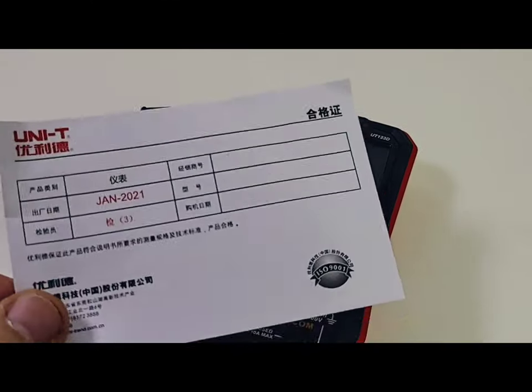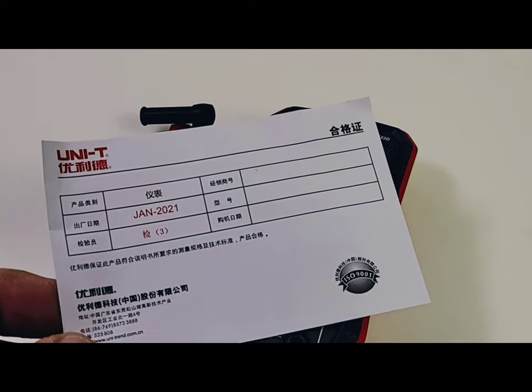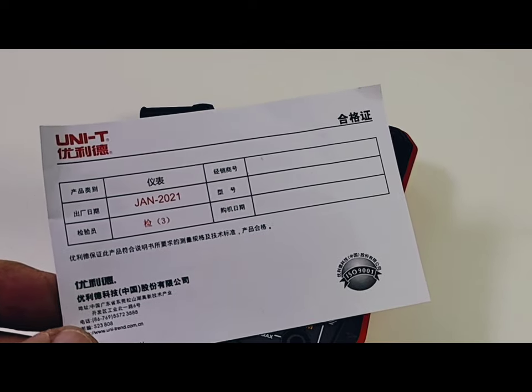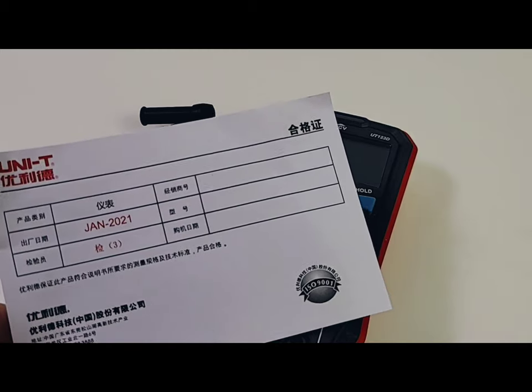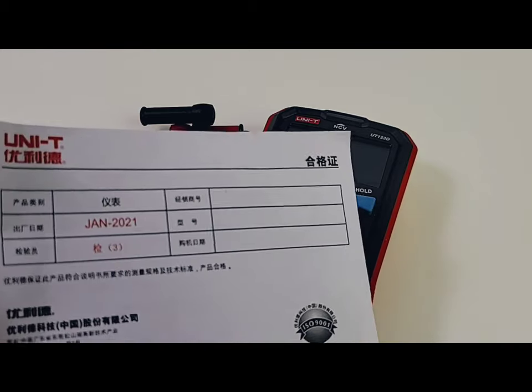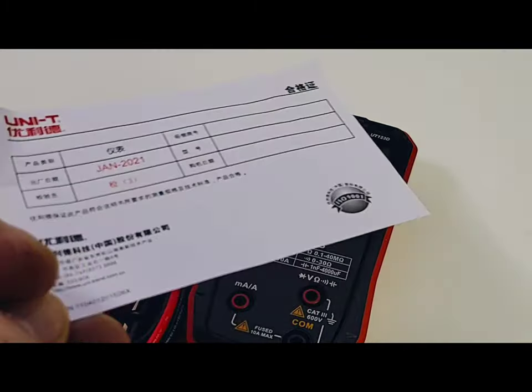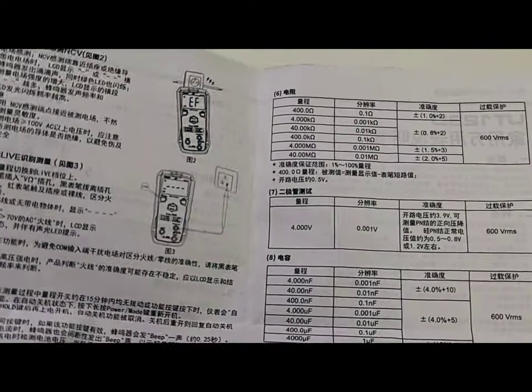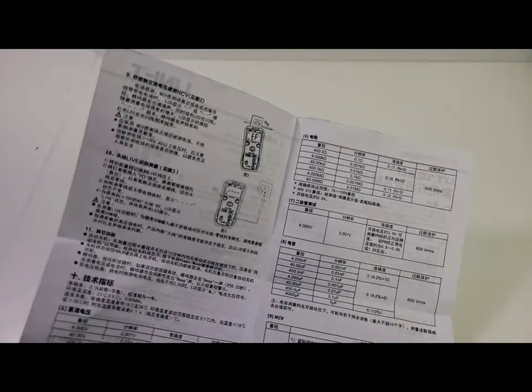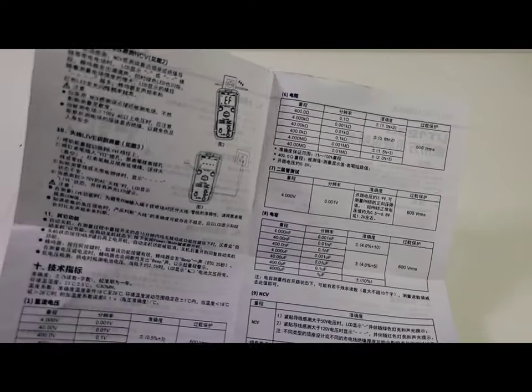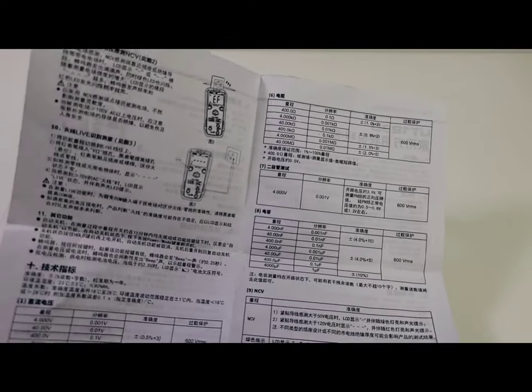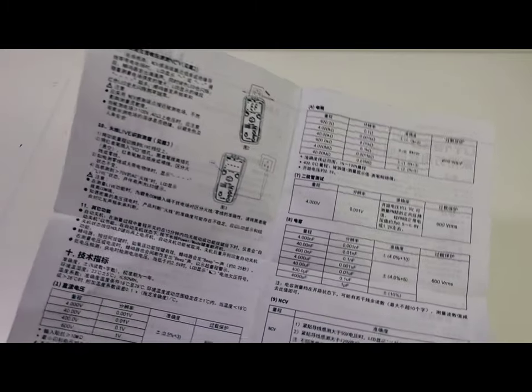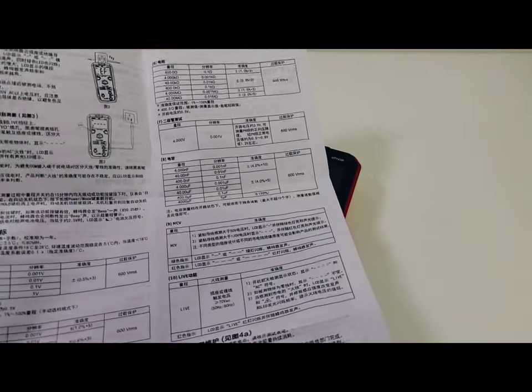What do you get with the meter? You get your date of manufacturer - Unity has a good habit of telling us when the meter was made: January 2021, pretty recent. Unity also gives us basically a data sheet. It's all in Chinese though. What's up Unity? Come on, we'd like to see a little bit of English as well.